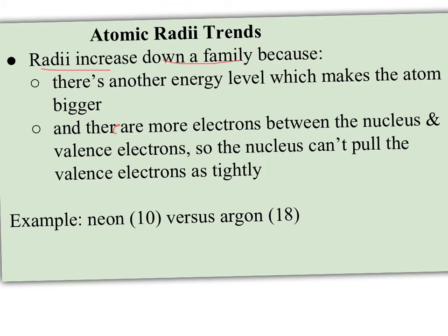So that means there's more electrons. There's more electrons between the nucleus and the valence electrons, so the nucleus can't pull the electrons as tightly on the big atoms as it can on the smaller ones.